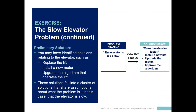The second part of the exercise is to first look at what the solutions have been for the originally framed problem. Most students will have identified solutions relating to the elevator, such as replacing the elevator, installing a new faster motor, or perhaps upgrading the algorithm that operates the elevator itself. These solutions fall into a cluster that shares assumptions about what the problem is — in this case, that the elevator is too slow.